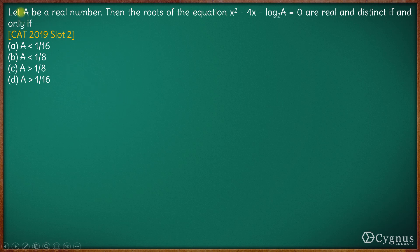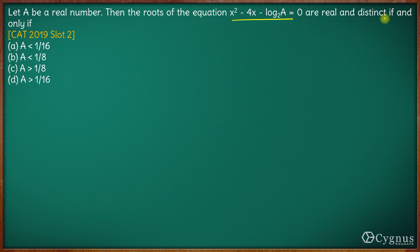Hi, here in this question we have let a be a real number, then the roots of the equation x² - 4x - log₂(a) = 0 are real and distinct if and only if.